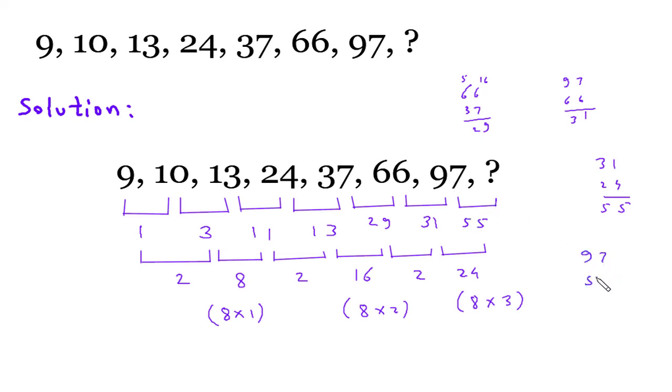So 97 plus 55 will be 152. The correct answer is 152.